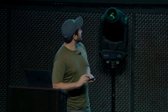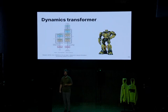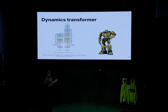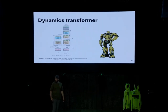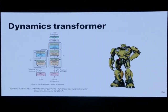Now to the beefy part — the dynamics transformer. A transformer is basically the same architecture as a large language model: ChatGPT, Llama, these kind of models. For large language models, a token is roughly one word, a sentence is a set of tokens, and a document is a set of sets of tokens. For us, an image is a set of tokens, a video is a set of images — so a set of sets of tokens. We train it the same way large language model researchers do: with cross-entropy loss, predicting the next token.